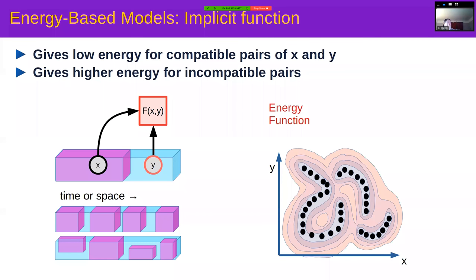There might be multiple y's compatible with a given x. Symbolically, you have scalar variables x and y with data points showing a strong dependency, but for any value of x there might be an infinity of compatible y values. The energy function takes low values on the data points and higher values outside — giving regions of low energy around regions of high data density. The big question is how to train such a system.